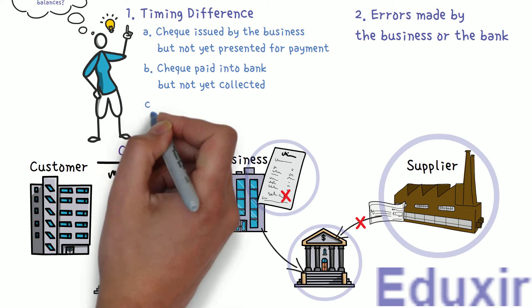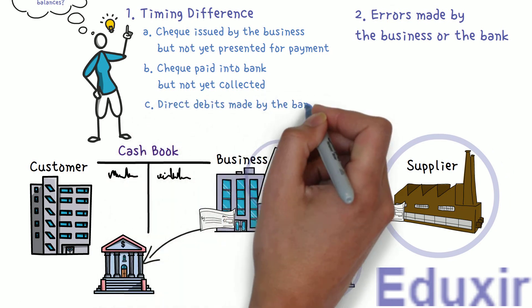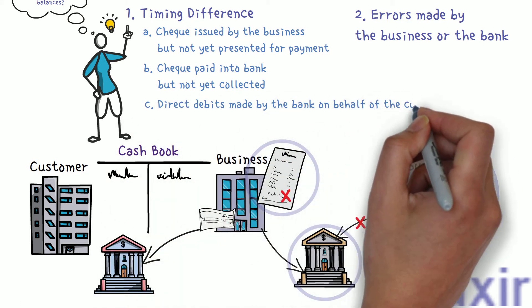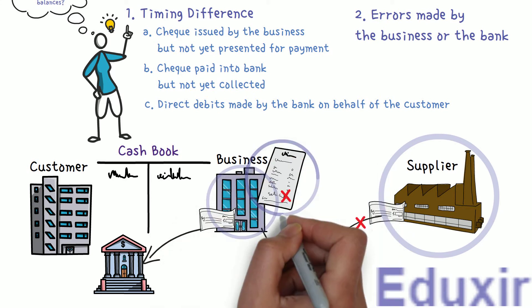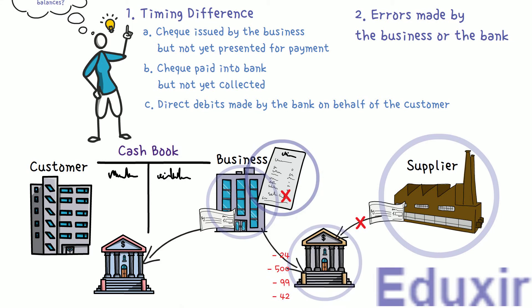The next reason is direct debits made by the bank on behalf of the customer. Sometimes the bank deducts amounts for various services from the business bank account, and the business will not be aware of these deductions until the bank statement is received. Examples of such deductions are check collection charges, interest on overdraft, etc. As the business does not know about these direct debits, they will not be recorded in the business cashbook, causing a difference between the cashbook and the bank passbook balances.